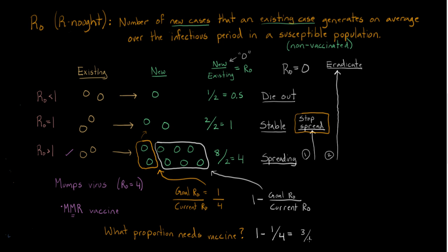So we'd say, this is 3 quarters, or 75%. In other words, if we are able to vaccinate 75% of people, meaning these folks, 6 out of 8 is 75%, then we basically have changed the way that mumps looks. It no longer looks like an R0 of 4. It looks like our goal R0, which is 1.